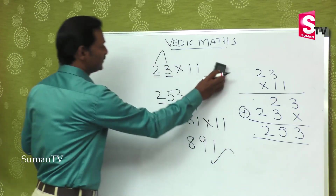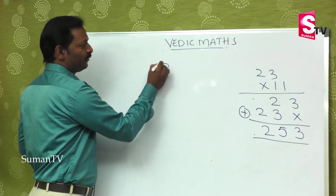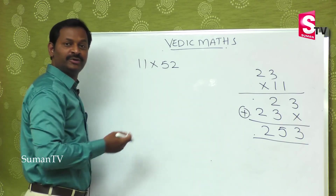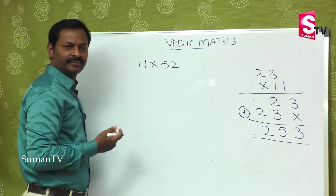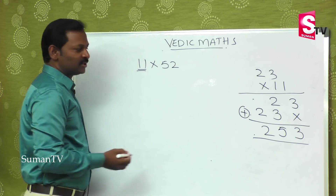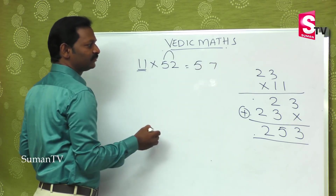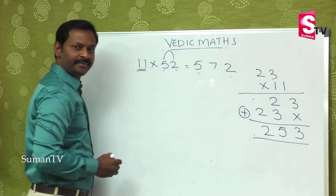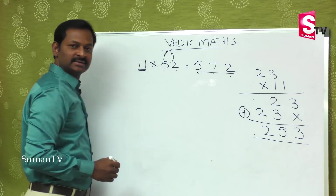Now give me back answers. Suppose 52 is multiplied by 11. The multiplicand and multiplier — it may be anything, this number is multiplying with 11. The answer will be 5, then add up 5+2 that is 7, then last number 2. So first number and last number remain the same, add these two numbers and put in the middle. The final answer is 572.